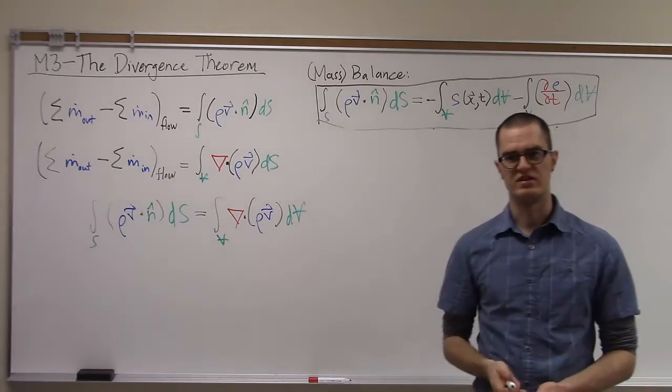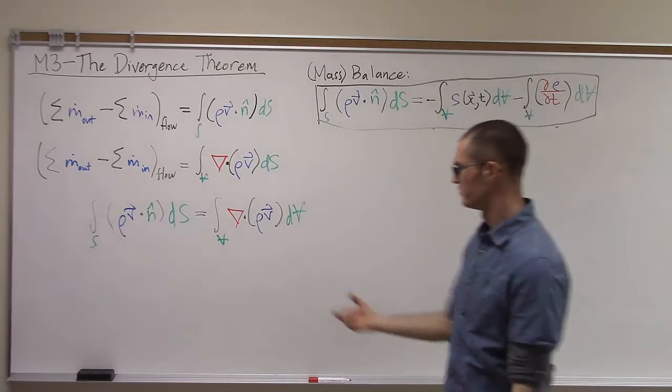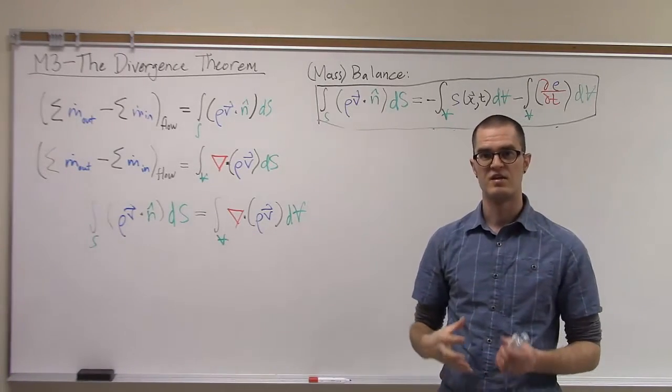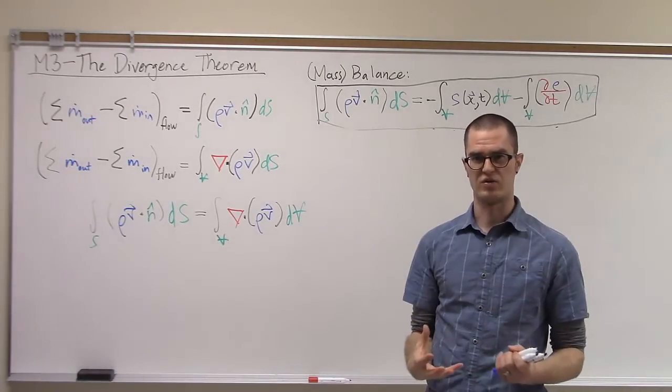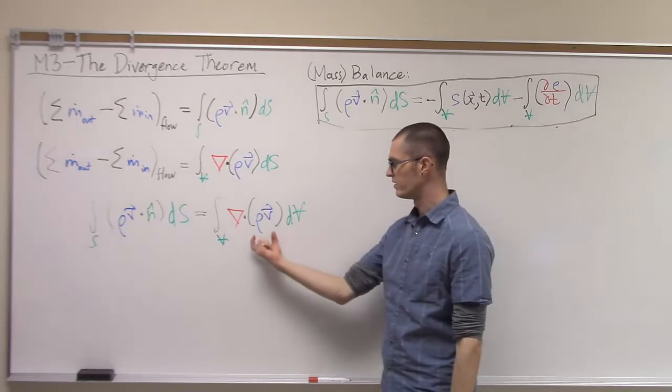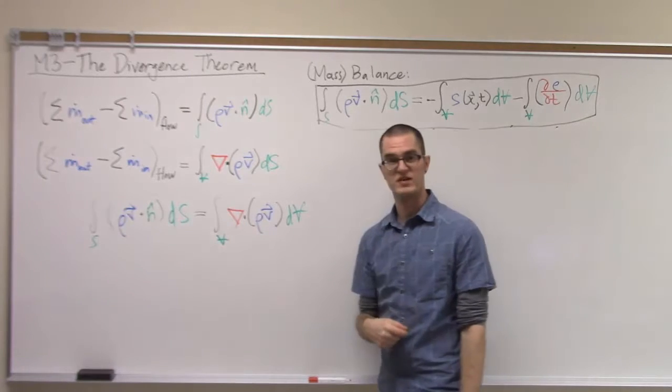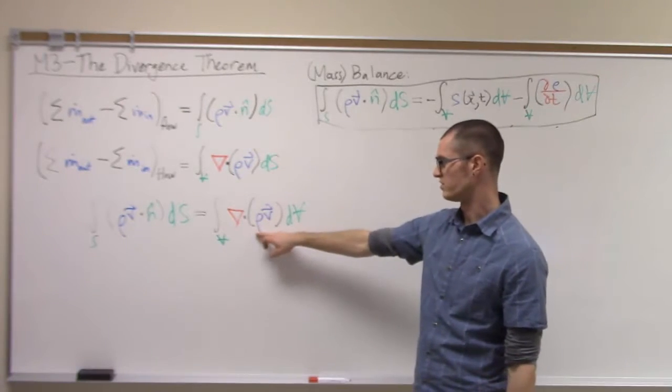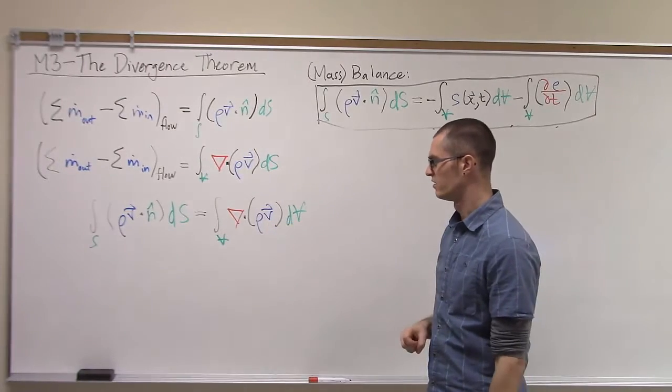This allows us to interpret the divergence - the physical meaning of the divergence - as the net outflow rate per unit volume of whatever our flux field is. Here we've defined our flux field as the concentration ρ times the flow velocity.